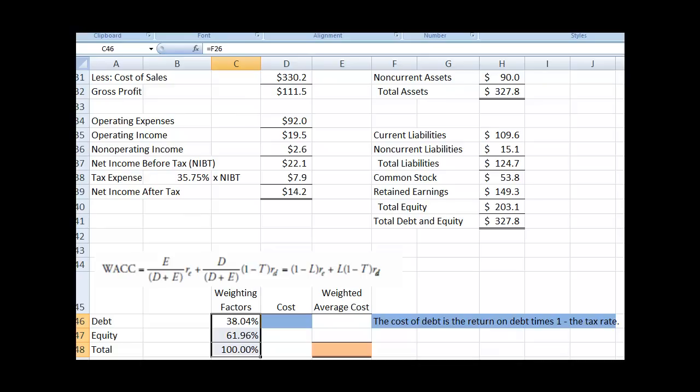Okay, so now where do we get the cost? And notice I got a note out here. The cost of debt is the return on debt times 1 minus the tax rate. So where is that in our formula? Okay, here's the return on debt and here's 1 minus the tax rate.